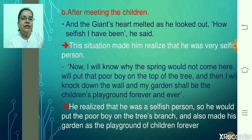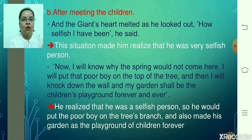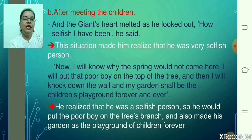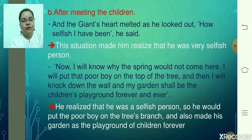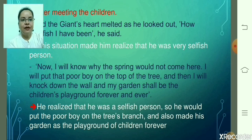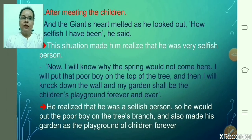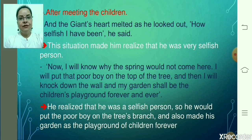But there is a change in him after he meets the children. The giant's heart melted as he looked out, and he said, 'How selfish I have been.' He then says, 'Now I know why the spring would not come here. I will put that poor boy on the top of the tree, and then I will knock down the wall, and my garden shall be the children's playground forever and ever.' He is now ready to allow the children inside the garden. He put the poor boy on the tree's branch and made his garden a playground for the children forever. The selfish giant had now transformed himself — his selfishness had altogether left him, his heart had melted, and he loved the children very much.